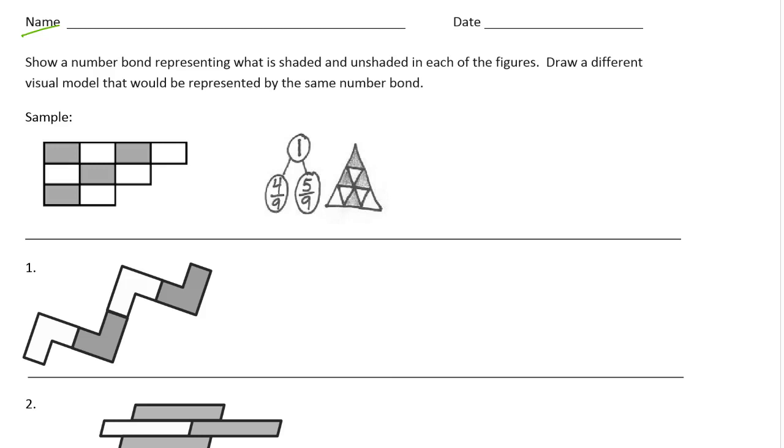Just to explain the example that's given right here, this is the sample that's given here and you can see that there are 1, 2, 3, 4 of the 9ths are shaded in. So that's why this number bond shows of the whole, one whole shape, 4 of the 9ths are shaded and 5 of the 9ths are not shaded. And this says 9ths because there's 9 equal parts to this shape. And then it says a different visual model.